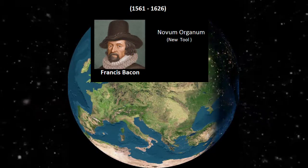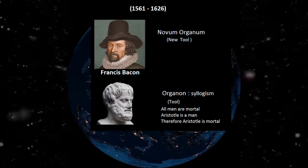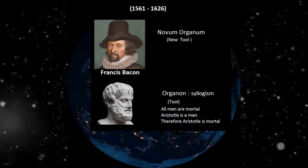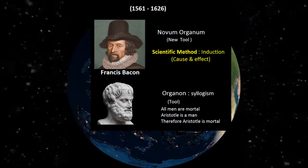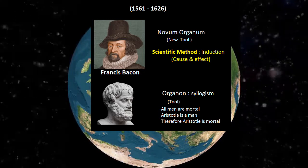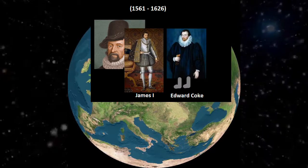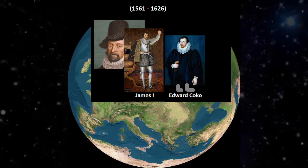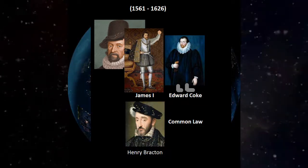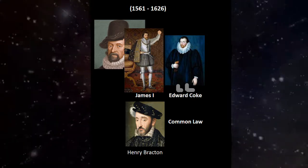Francis Bacon's Novum Organum was famous across Europe. It was a rejoinder to Aristotle's Organon, in which Aristotle introduced the syllogism. Bacon's new tool was the scientific method — induction, or cause and effect. Despite Bacon's scientific enlightenment, he supported the King's belief in divine rule. It was Edward Coke who stood up to the King — or rather knelt down to him — when the King raised his fist. Coke had quoted Bracton's common law and told the King he was acting illegally. James reacted with Scottish fury but stayed within the law.